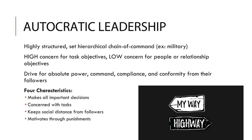There are four main characteristics to identify an autocratic leader. First, the leader makes all important decisions. Second, the leader is primarily concerned with task accomplishment, not the happiness or satisfaction of their followers. Third, the leader maintains considerable social distance from their followers. And lastly, the leader motivates followers by punishment or threat of punishment rather than by rewards. Autocratic leadership is mostly known for having low importance on relationships.